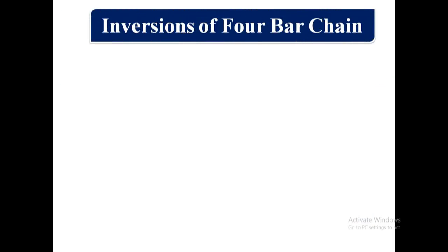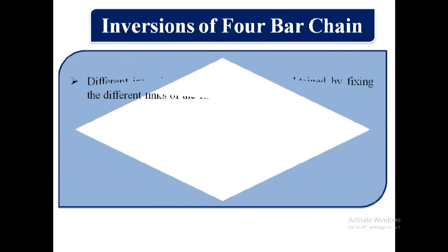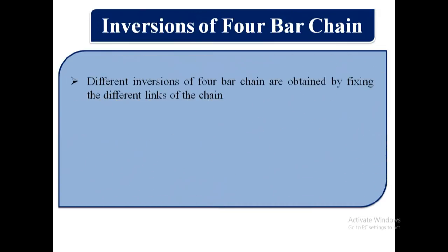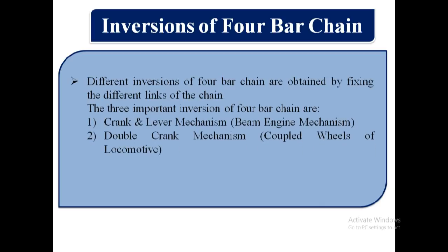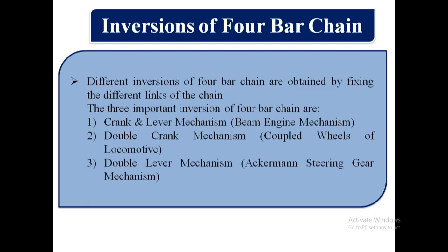Now we will see inversions of four bar chain. Different inversions are obtained by fixing the different links of the chain. The three important inversions of four bar chain are: first — crank and lever mechanism (beam engine mechanism); second — double crank mechanism (coupled wheels of locomotive); and third — double lever mechanism (Ackermann steering gear mechanism). Now we will see each one in detail.